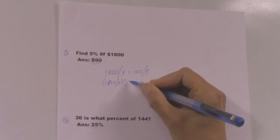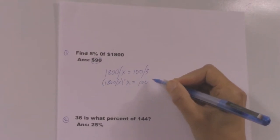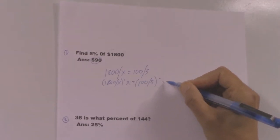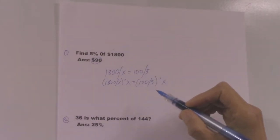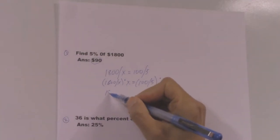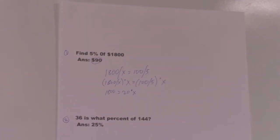By 1800 by x times x equal 100 by 5 times x. We multiply both sides of the equation by x, so 1800 equals 20 times x.